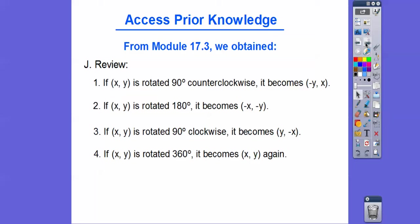This is just a quick review we did in Module 17.3. If (x, y) is rotated 90 degrees counterclockwise — counterclockwise is going to the left — then it becomes (-y, x). And if (x, y) is rotated 180 degrees, then you just take the opposites: (-x, -y). If (x, y) is rotated 90 degrees clockwise, then it becomes (y, -x). And 360 degrees just rotates it back into the same position.